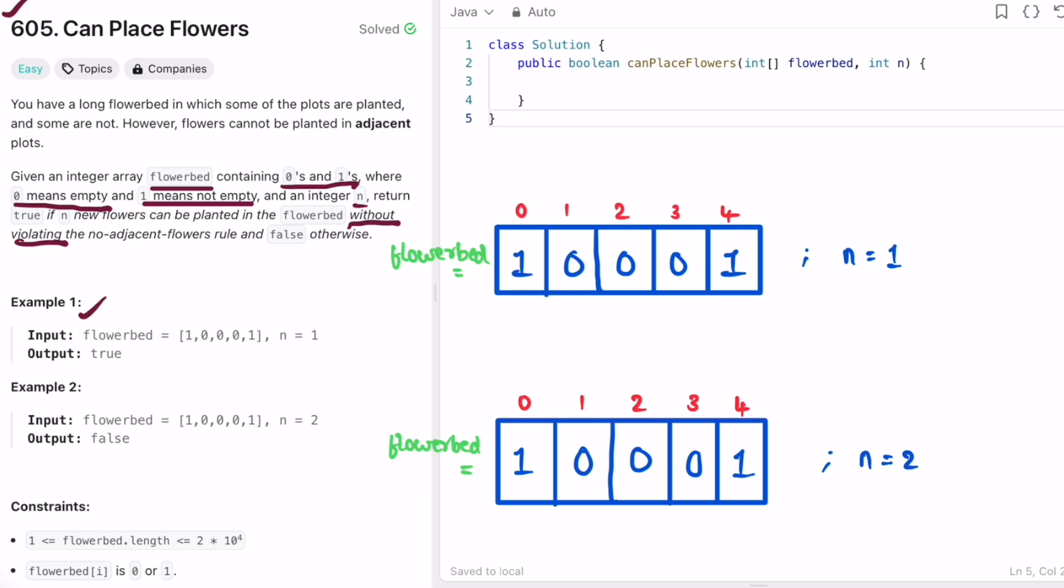So let's take this example here. We are given this flowerbed and we have to plant one more new flower such that no two flowers are adjacent to each other. You cannot place the flower here because it is adjacent to here. You cannot place it here because it is adjacent to a flower. You can place a flower here because there are no flowers adjacent to it. So you can place the new flower here and the no adjacent flowers rule is not getting violated. You already placed the flower, so n is zero and there is no need to place a new flower, so you return true as the output.